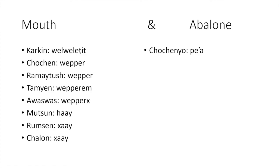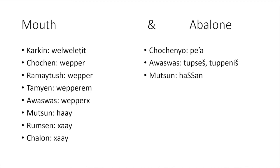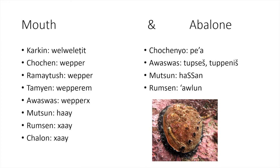Let's look at the word for 'abalone.' Not many words are documented, but Chochenyo is 'pea,' Awaswas is 'tupenish,' Mutsun is 'hashan,' and Rumsen is 'aulun.' In this case all four are completely unrelated to each other — sometimes a word just depends on the specific language, regardless of branch placement, and they are simply different words with no clear shared origin.